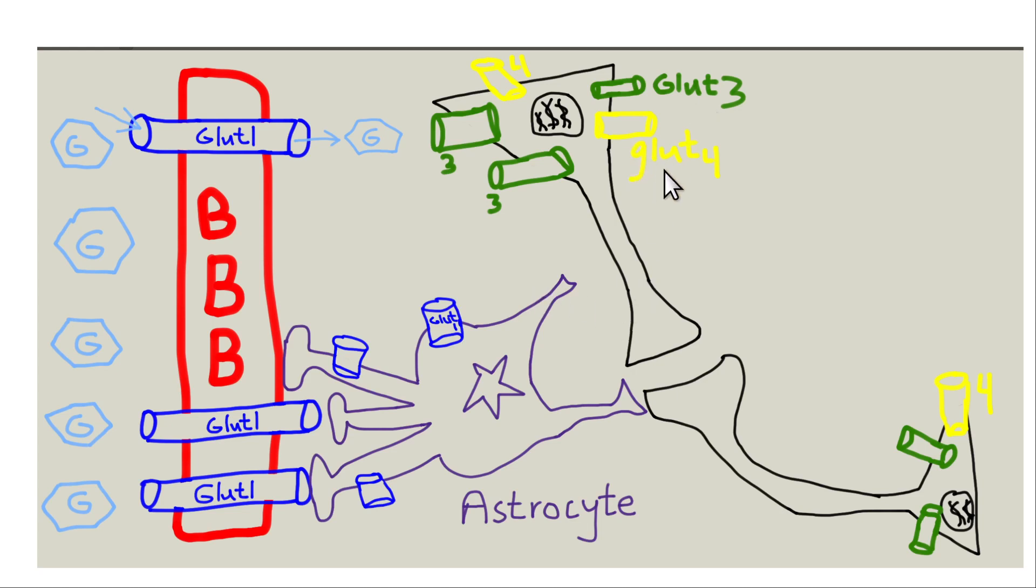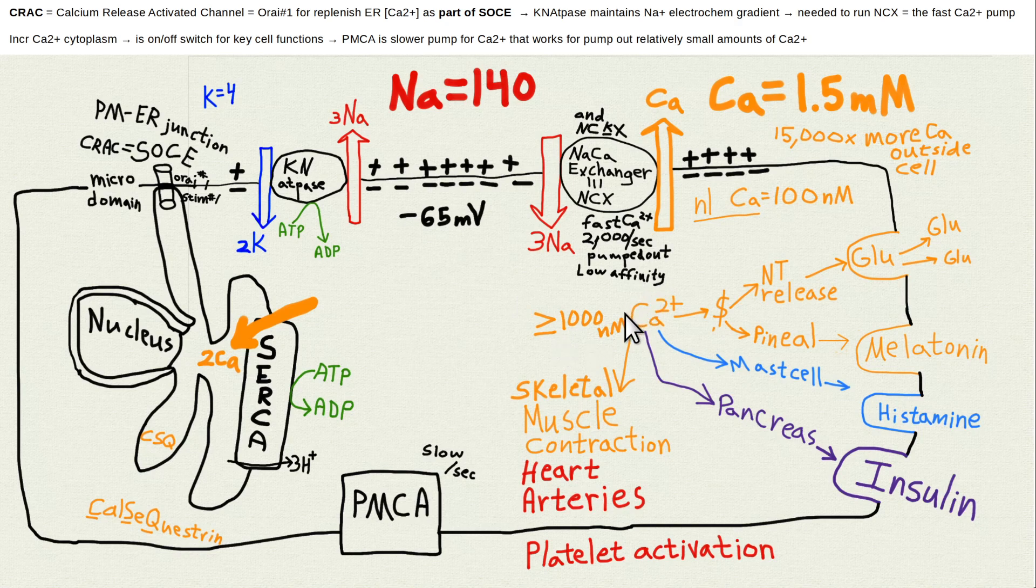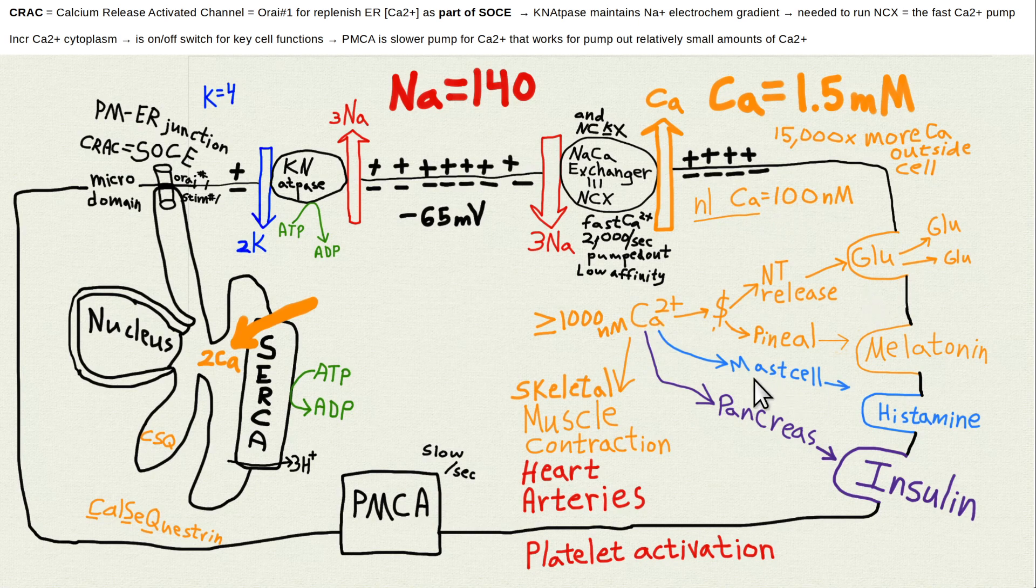We talked before about how neurons also have glucose type 4 transporters, so they are sensitive to insulin resistance. I covered that much more extensively in other lectures. Here's a little bit more on calcium: when you get a bump up in calcium, about tenfold, let's say normally it's about 100 nanomolar, it goes up to 1,000 nanomolar. That makes the neuron release its neurotransmitter, makes the pineal gland release melatonin, the mast cell release histamine, the pancreas beta cells release insulin, and all the muscle cells - skeletal, smooth, and cardiac muscles - it causes them to contract, and the platelets causes them to be activated, more prone to clotting.